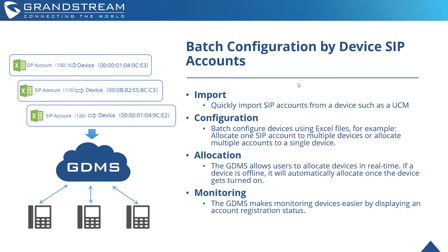Devices can be batch configured by device SIP accounts as well. It's really easy to go ahead and quickly import SIP accounts from a device such as a UCM. So if you're looking to manage deployments that are already out there in the field, it's easy to get them quickly added to the GDMS. Batch configuration can also be done using Excel files — for example, you can allocate one SIP account to multiple devices or multiple accounts to a single device.